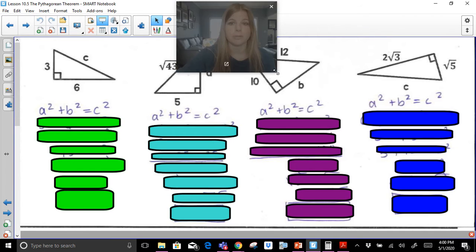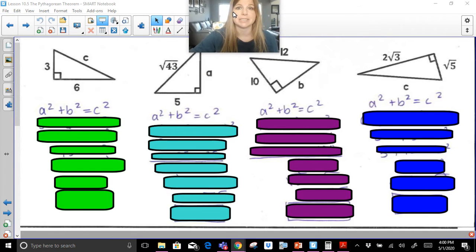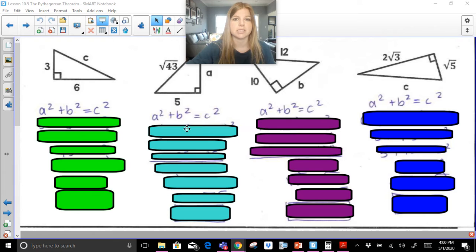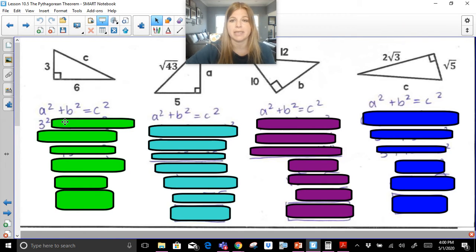I'm going to be able to use that formula to solve for missing side lengths that I see in these triangles. So in my first one here, I'm given two legs, 3 and 6. Now it doesn't matter which leg goes in for A or B, but what does matter is that we always make sure the hypotenuse goes in for C. So here I'm going to call 3 the A, so 3 squared, plus I'm going to fill in 6 for B, 6 squared equals C squared.